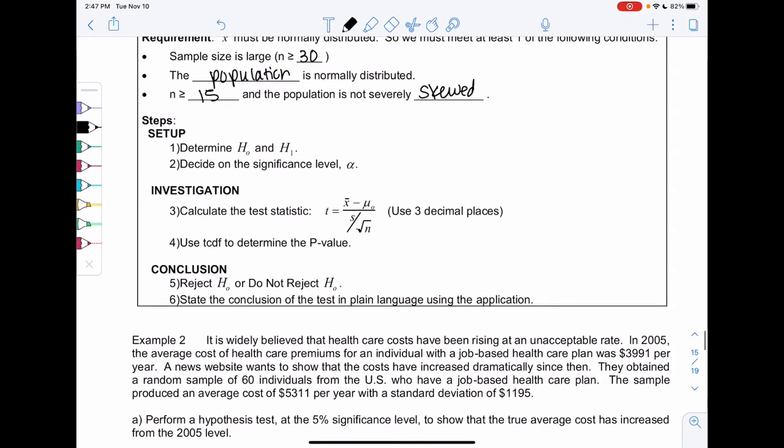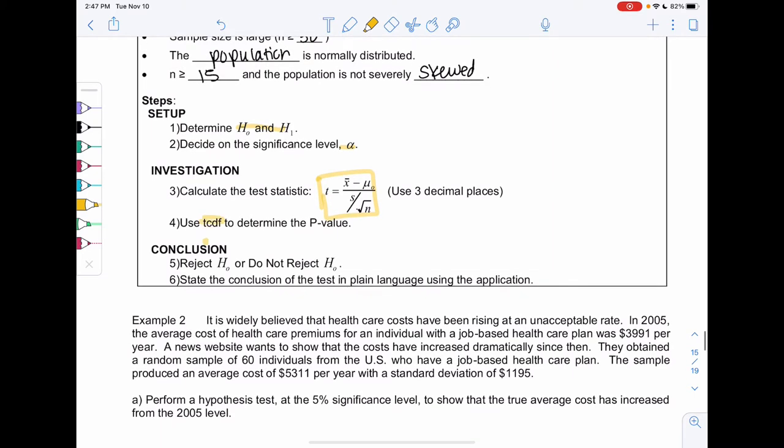The middle steps look the same. Step 1 and 2 are the same thing we've been doing, hypothesis and alpha. Step 3 is just a T-score rather than a Z-score. We'll use T-CDF rather than normal. And then 5 and 6 are the same.